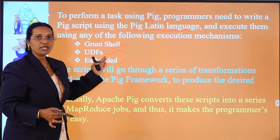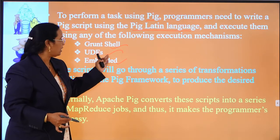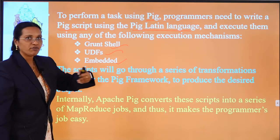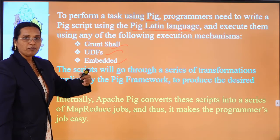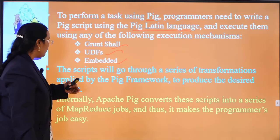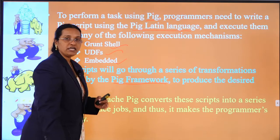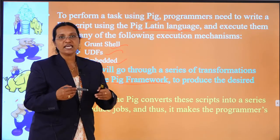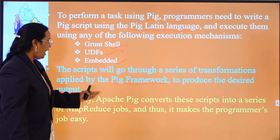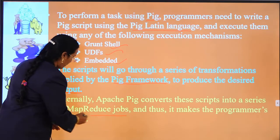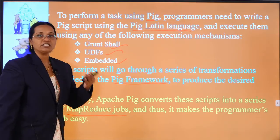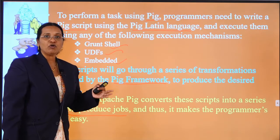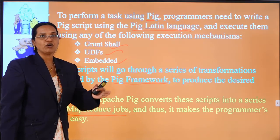Programmers can write Pig scripts using the Grunt shell, user-defined functions, or the embedded mechanism. The script goes through a series of transformations — parsers, compilers, and execution phase — which are applied by the Pig framework. Apache Pig converts these scripts into a series of MapReduce jobs, making the programmer's job easy. You only write the Pig script, which is simple, and internally it is converted to Java MapReduce code.